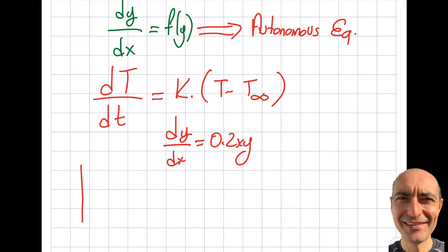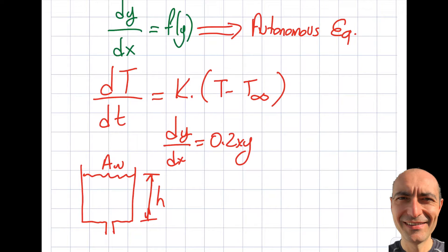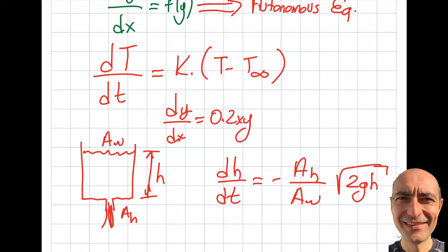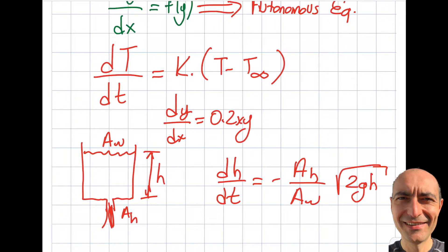Another example from fluid mechanics: consider a tank with an opening at the bottom, where fluid of height h drains out. If I'm interested in dh/dt, this equals −(A_h / A_w) × sqrt(2gh), where A_h is the area of the small opening, A_w is the cross-sectional area of the tank, and g is the gravitational constant. This is an autonomous equation — no explicit time on the right-hand side.